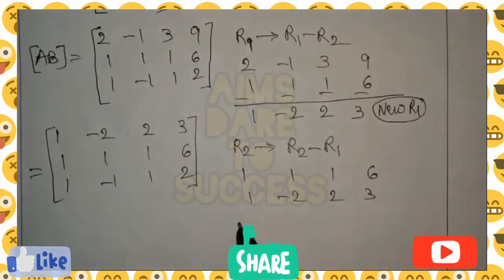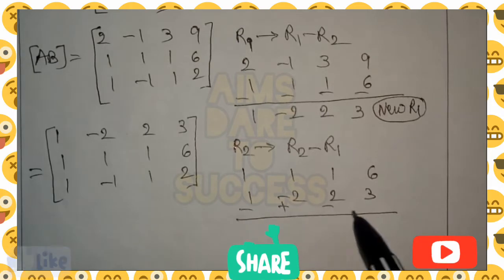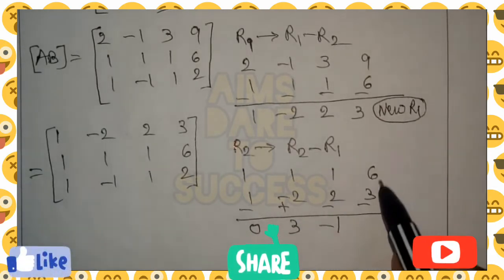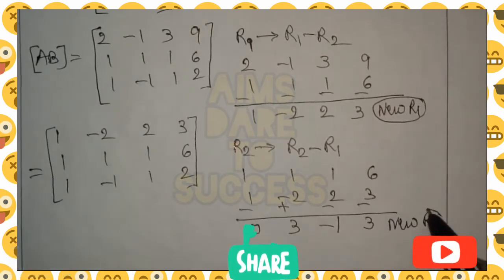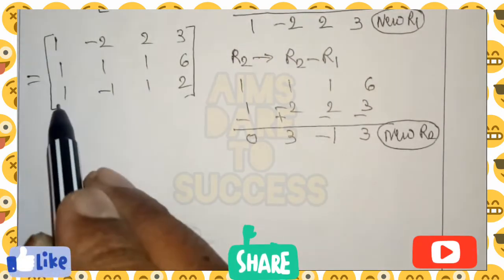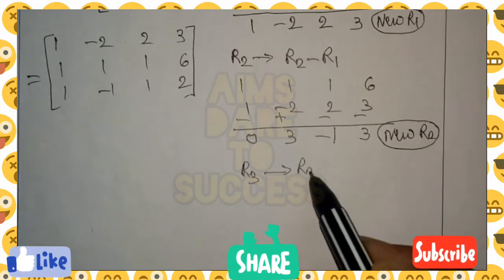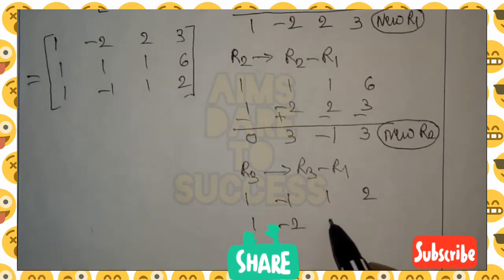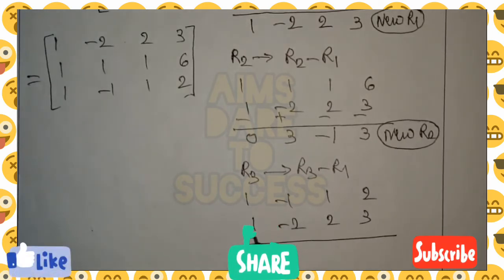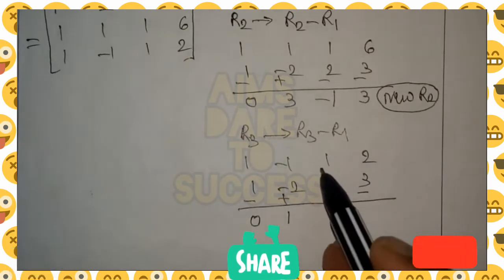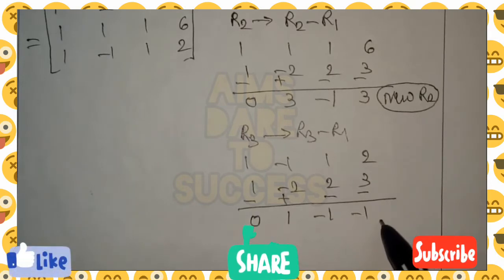R2 is 1, 1, 1, 6 and R1 is 1, minus 2, 2, 3 — just subtract them to get new R2: 0, 3, minus 1, 3. Next, change R3 also using R1 only. R3 gives rise to R3 minus R1. R3 is 1, minus 1, 1, 2 and R1 is 1, minus 2, 2, 3. Subtracting: 1 minus 1 is 0; minus 1 minus minus 2 is 1; 1 minus 2 is minus 1; 2 minus 3 is minus 1. This is new R3.